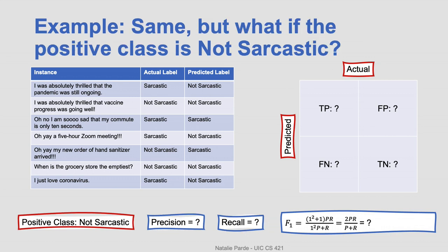Let's say that now we want to check what our performance is like if not sarcastic is the positive class instead. We'll need to go ahead and fill out our confusion matrix again based on this new truth. So now we have two true positives, three false positives, one false negative, and one true negative.